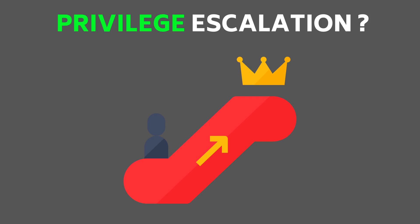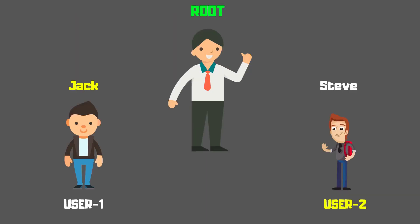Assume that a system has three users: one is root user, and the other two are user one and user two. Let's name user one as Jack and user two as Steve. So now there are three users — root user, Jack, and Steve. Jack and Steve have the same privilege, while the root user, as we know, has high privileges and can do anything. Jack and Steve cannot perform certain activities on the system.